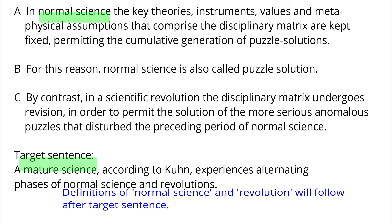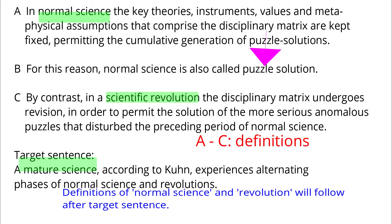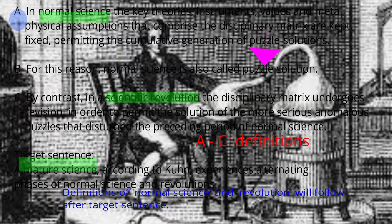A defines normal science. B follows A logically, since B and A are chained by the words 'puzzle solution.' C defines scientific revolution. A through C define normal science and revolutions. Thus, the target sentence should come before A.